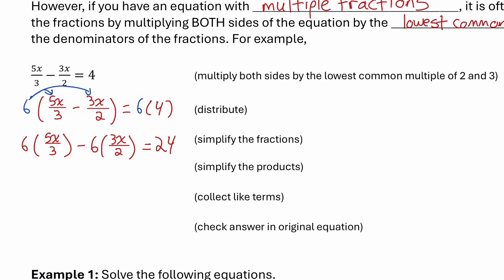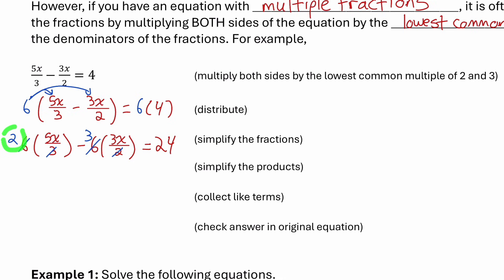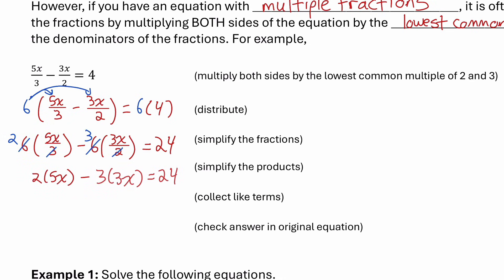Now I can simplify the fractions. I have 6 divided by 3, which is 2, and I have 6 divided by 2, which is 3. This leaves me with on the left: 2 times 5x minus 3 times 3x. If I simplify those products, I have 10x minus 9x equals 24.